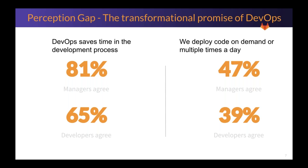Could it be that developers are lost in the trees and not seeing the forest? They're so consumed with their day-to-day tasks — their piece of the puzzle — and they see problems with just their piece, not the larger view that a manager might have of the entire project. That might explain why they're a little less optimistic than managers, who have the bigger picture view.